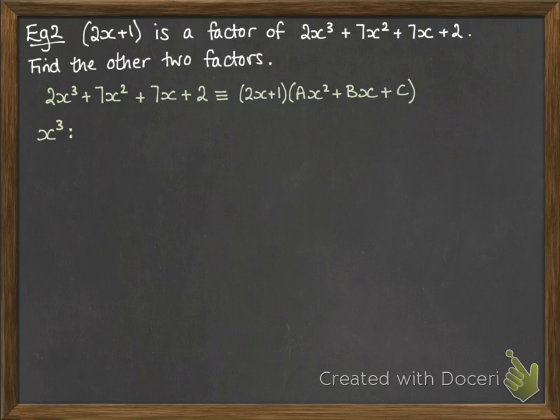So if we compare our coefficients of x cubed, we've got a 2 from the left-hand side. And on the right-hand side, we make x cubed by doing that 2x multiplied by the ax squared. So therefore, 2 is equal to 2a, and a is 1.